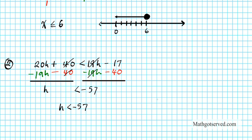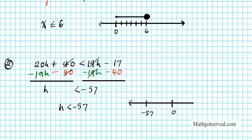Let's graph that on the number line. Obviously I can't scale all the way to negative 57 so I'll make a big leap — this is zero and here is negative 57 to the left of zero. It's going to be an open circle with the arrow pointing to the left, since this is less than. Do I fill in the circle? Absolutely not — you do not have a line under this inequality so your circle stays open. There goes the solution and the graph.